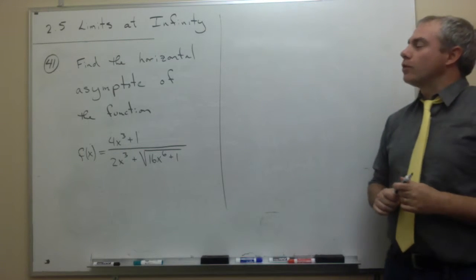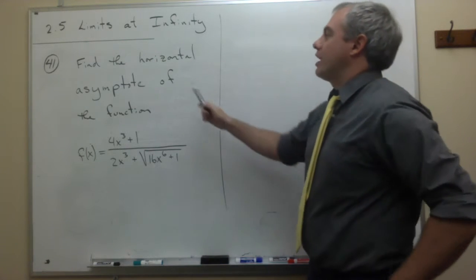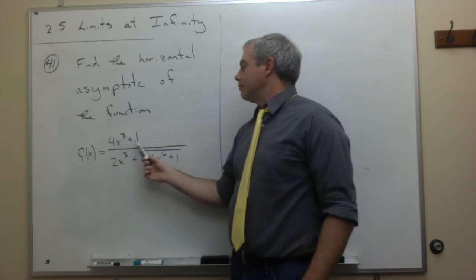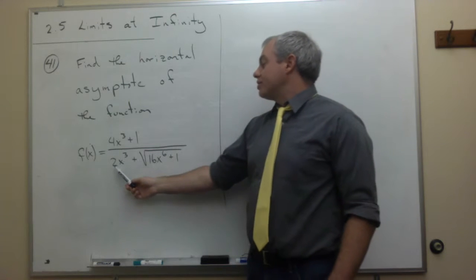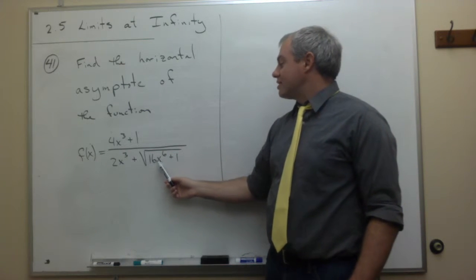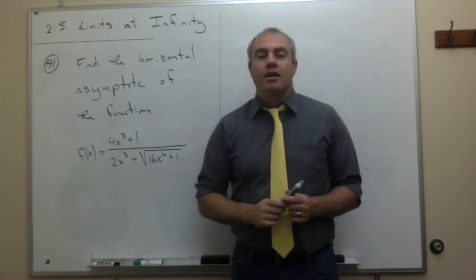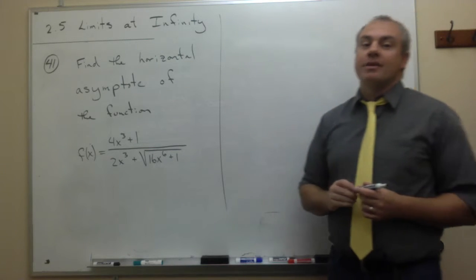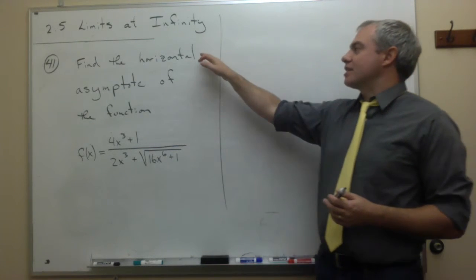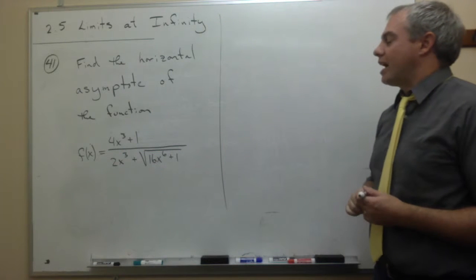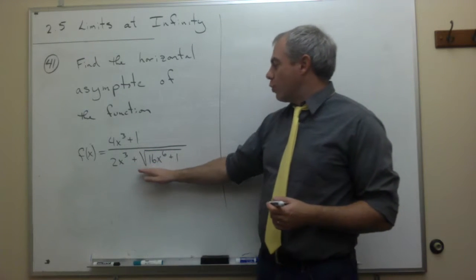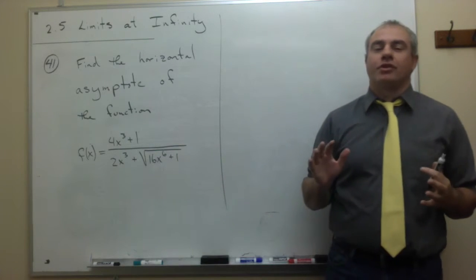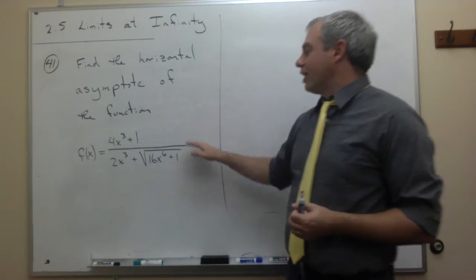Now let's look at problem 41. Problem 41 asks us to find the horizontal asymptote of the function f(x) = (4x³ + 1) divided by (2x³ + √(16x⁶ + 1)). At first glance, this problem might look a little harder than some of the other problems in the section asking to find the horizontal asymptote, because there's a square root in the denominator, meaning this is not really a rational function — it's not a polynomial divided by a polynomial.